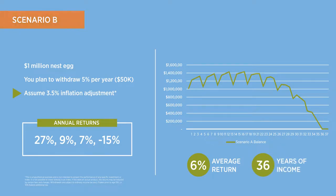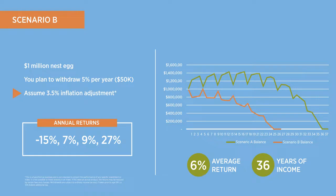In Scenario B, you start with the same $1 million nest egg. You withdraw the same 5% per year and assume a 3.5% annual adjustment for inflation. However, now the sequence of returns is reversed, starting with the negative return in the first year and repeating until the retirement income is depleted. While the average return is the same — 6% — because withdrawals were started in a down market in Scenario B, retirement income runs out in 23 years, 13 years less than starting in an up market in Scenario A, and providing around half of the total retirement income when adjusting for inflation.